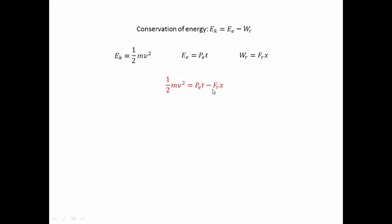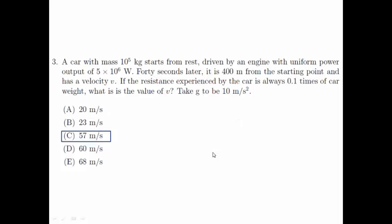The values for each of the terms in this equation are given in the question as shown here. So now substituting all these values into this equation, we can compute the value of V and you'll get V equals 57 m/s. So the final answer to this question is C, 57 m/s.